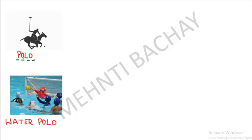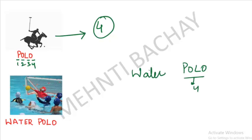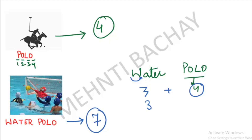Next game is Polo. If you look at the spelling of Polo, it has 4 letters: P, O, L, O. So remember that in Polo, there are 4 players. Next is Water Polo. In Polo we have 4 players. If you rotate the word 'Water', it looks like the number 3. So 3 plus 4 (from Polo) equals 7. So in Water Polo, there are 7 players. Remember: Polo has 4, Water Polo has 7.